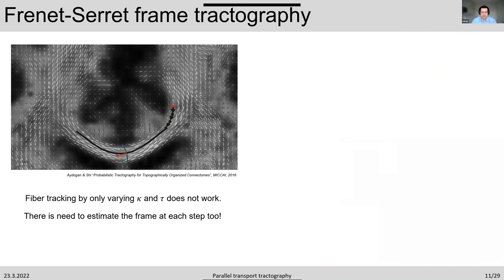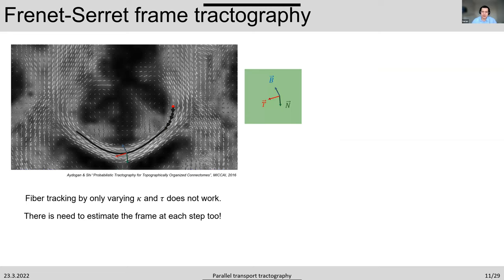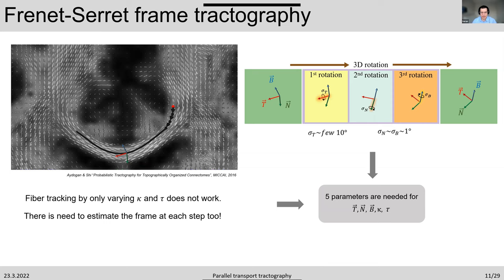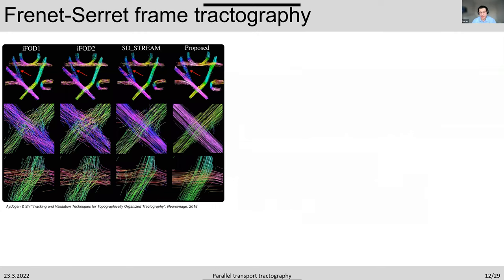We also have a problem with straight lines: if curvature is zero, there is no frame, making initialization at or near straight-line segments highly problematic. To address this, we estimated the frame itself at every step by rotating in three dimensions across the tangent, normal, and binormal axes, increasing the parameter space to five dimensions. This was quite computationally demanding and slow, but we obtained very promising results.